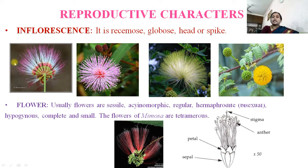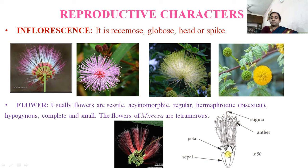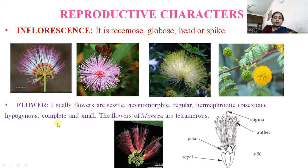Reproductive characters: inflorescence is racemose, globose head, or spike. Flowers are usually sessile and actinomorphic — actinomorphic means when we cut the flower from the center we get two equal halves. Flowers are regular, complete, hermaphrodite (bisexual), hypogynous, and small. Flowers in Mimosa are tetramerous.